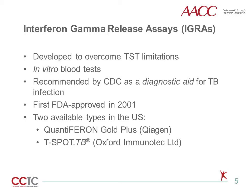The first FDA-approved IGRA, the QuantiFERON TB test, came to market in 2001. Three generations of this QuantiFERON assay followed, each replacing the last. The currently available QuantiFERON assay, called the QuantiFERON Gold Plus, is the fourth generation of this line. The other type of IGRA available in the United States, the TSPOT.TB assay, was FDA-approved in 2008. These two types of IGRAs are also available in Canada, Europe, and many other countries.